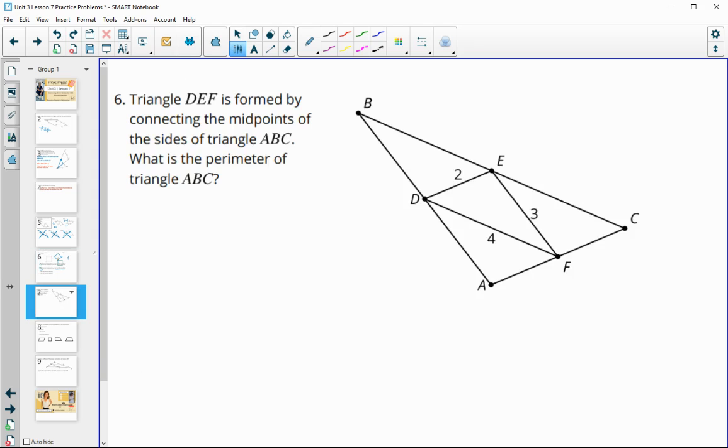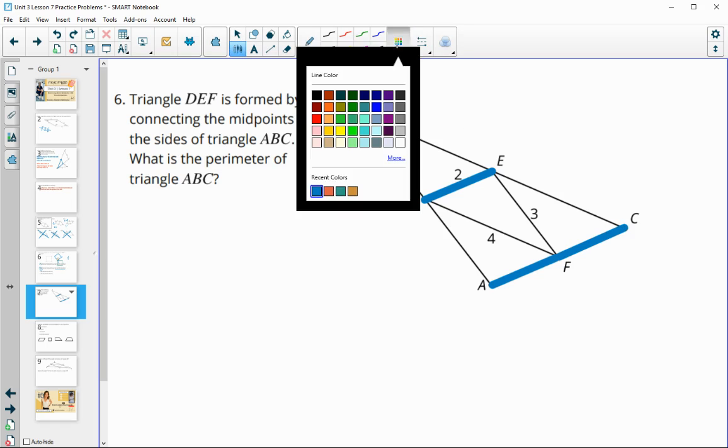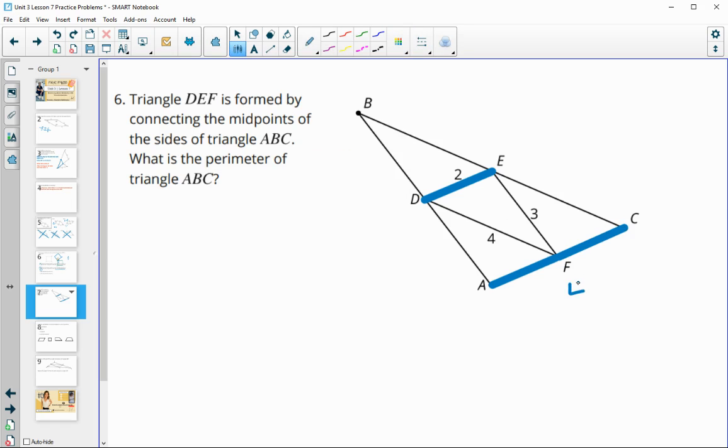Number six: triangle DEF is formed by connecting the midpoints of the sides. What is the perimeter of triangle ABC? So remember that when we have these midpoints, this segment here that connects that is the same as the one that it's parallel to on this other side. So this one right here is two and this one right here is two, so AC is actually double that length. So AC is four, and that's going to happen with all of these sides.